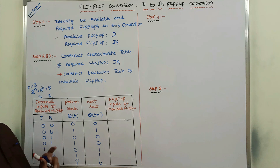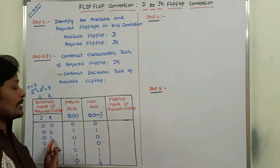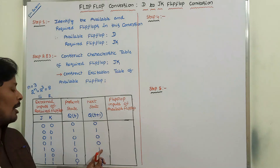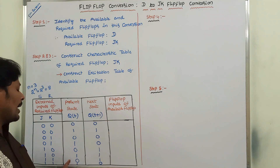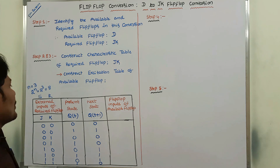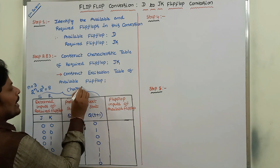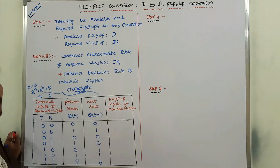So summarizing: J=0, K=0, whatever the previous output value is obtained as next state. J=0, K=1, it is reset state, output is zero. J=1, K=0, it is set state, output is one. J=1, K=1, the previous output is complemented. The first three columns represent the characteristic table of JK flip-flop. If anybody wants, please refer to the previous video for the characteristic table of JK flip-flop.